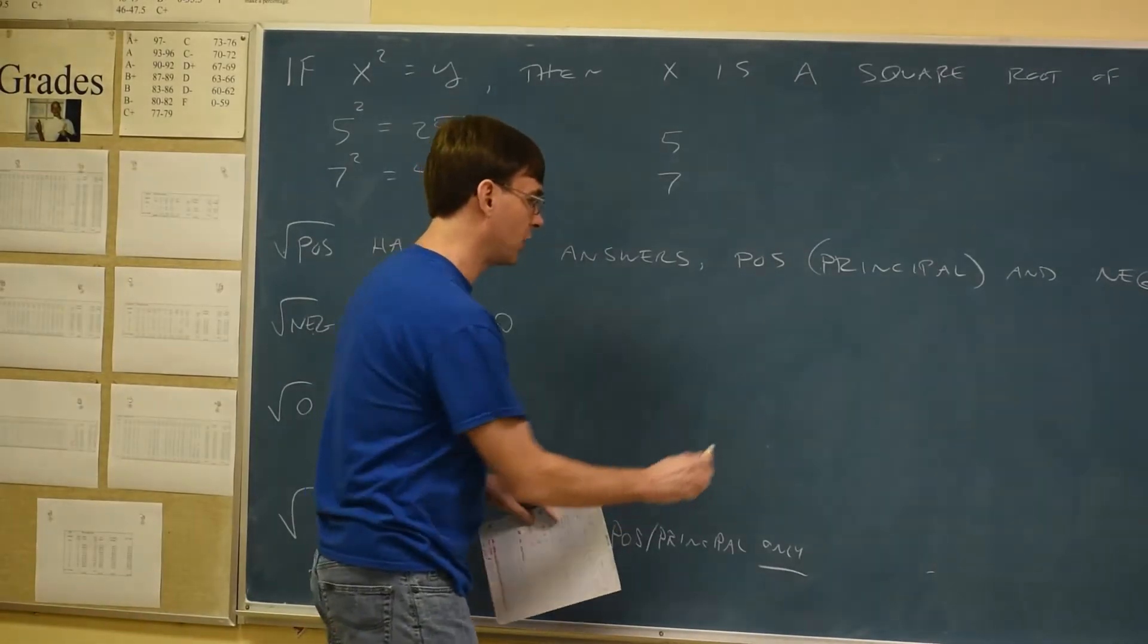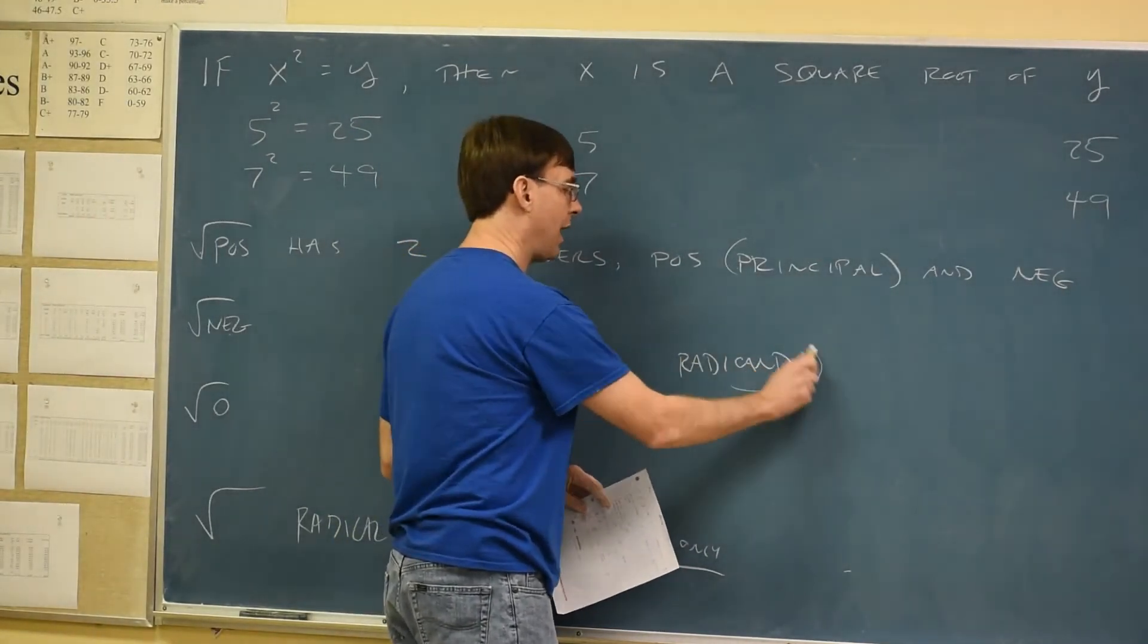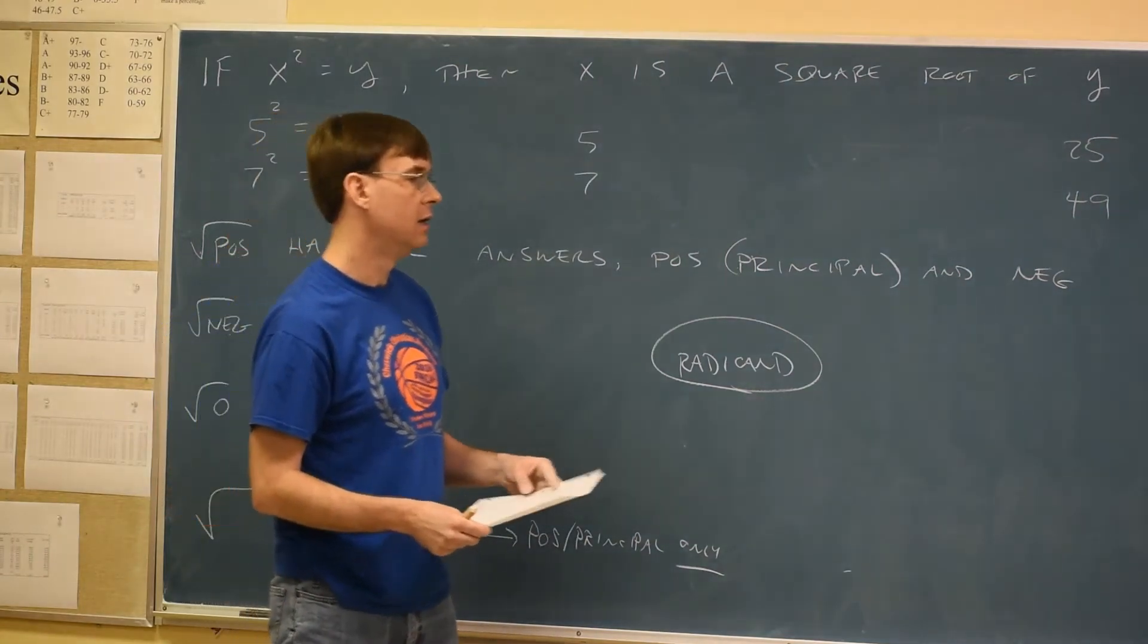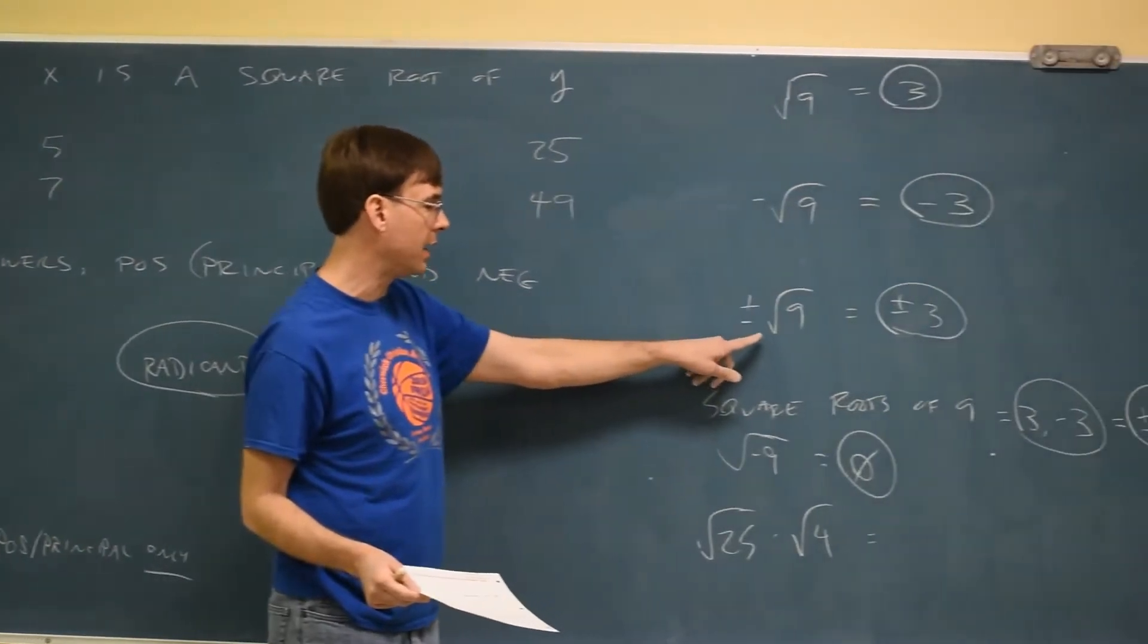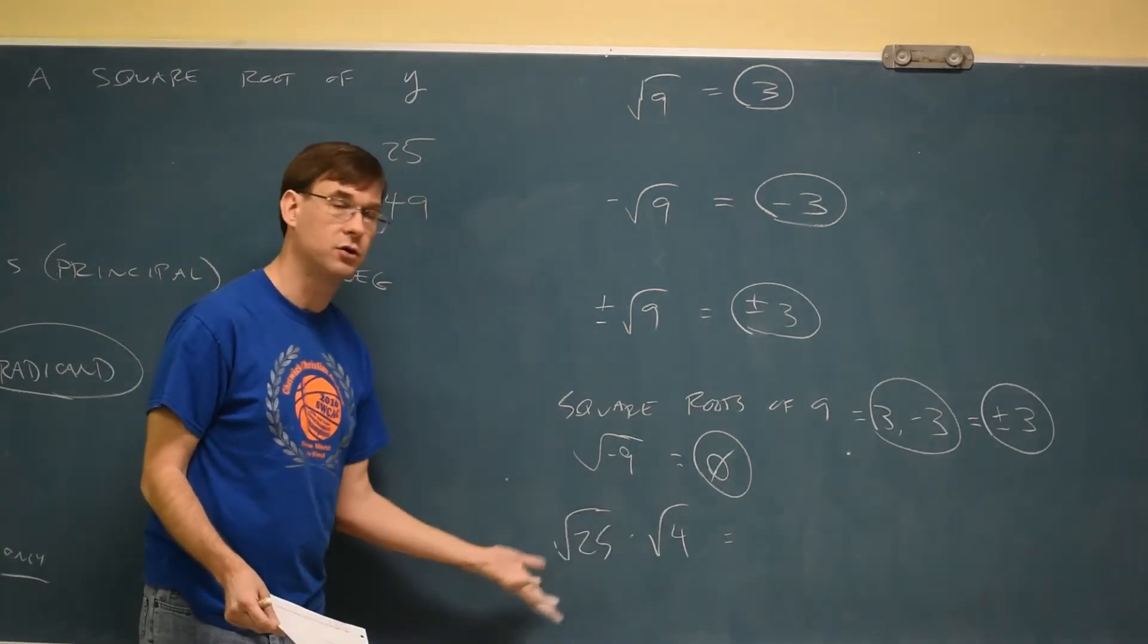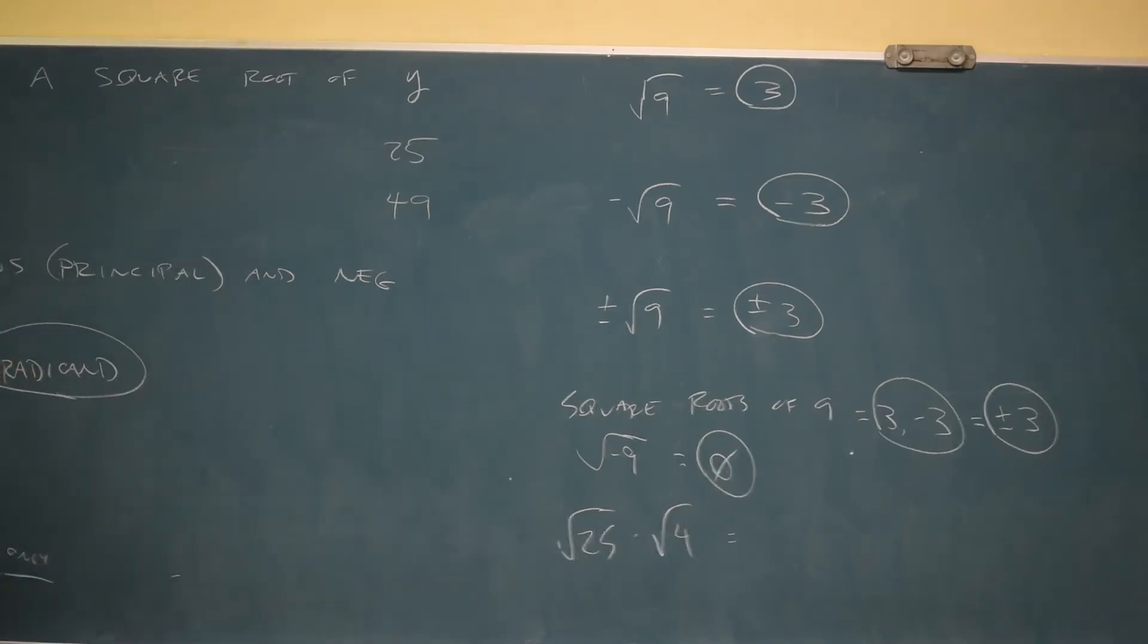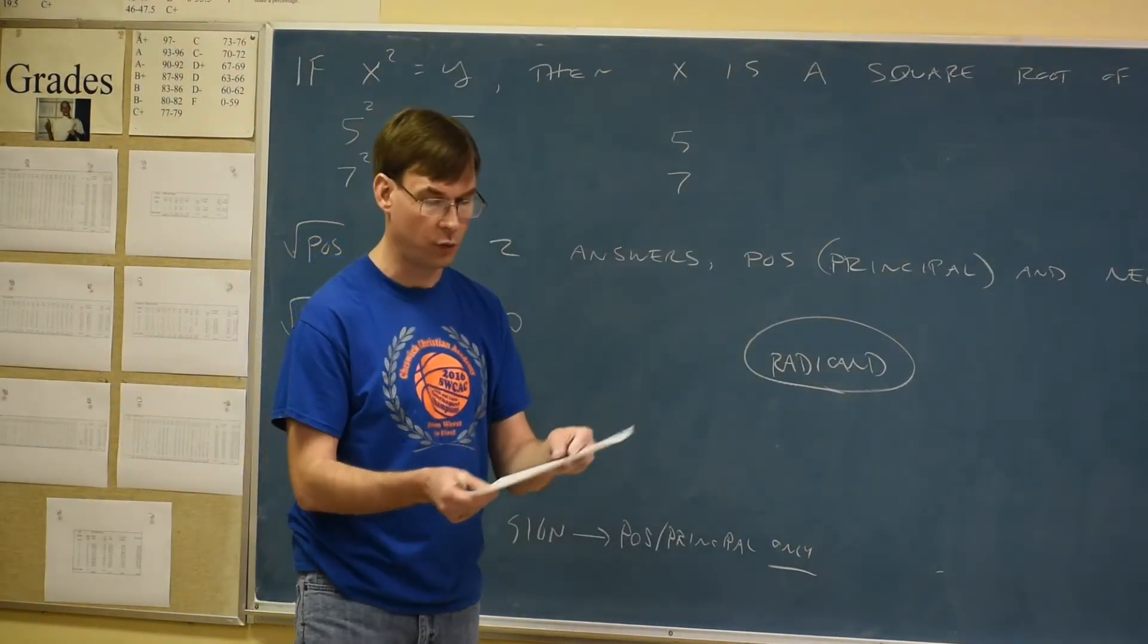Also worth a mention is the word radicand. The radicand is just the number under the radical sign. So, so far over here, all of our radicands have been nine, except this radicand, with a d at the end, is a negative nine. 25 and 4, those are radicands from that question. That takes me about halfway down the page of notes here from 12-1.